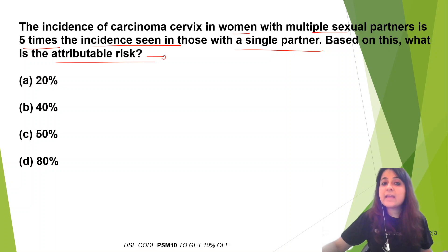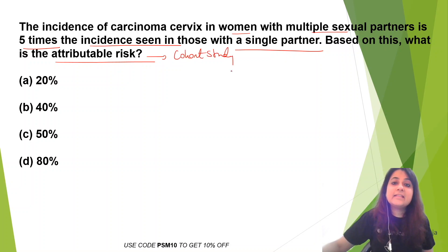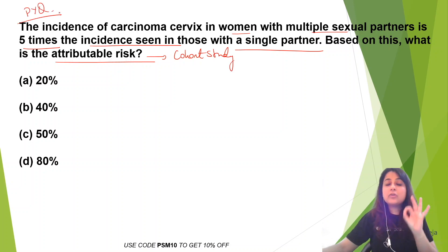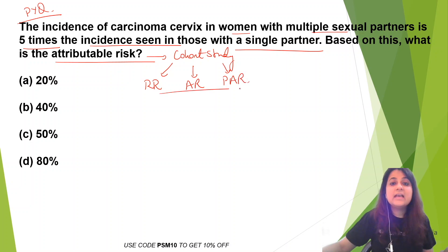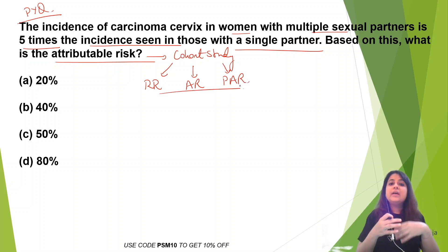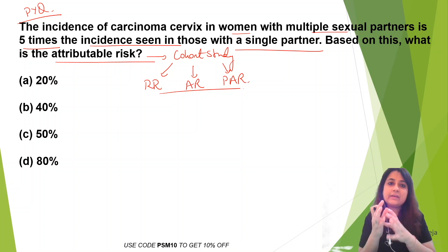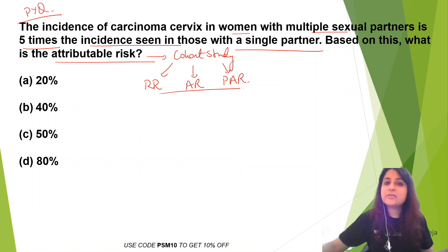In which type of study design do we calculate attributable risk? In a cohort study. This is actually a previous year question we are discussing today. In a cohort study we calculate 3 things: relative risk, attributable risk, and population attributable risk. Let me quickly recapitulate the formula for all of these.